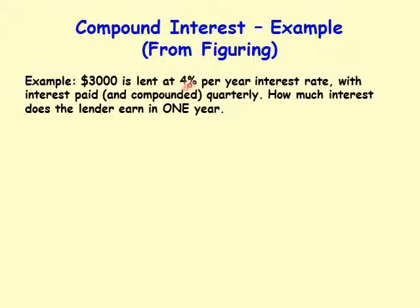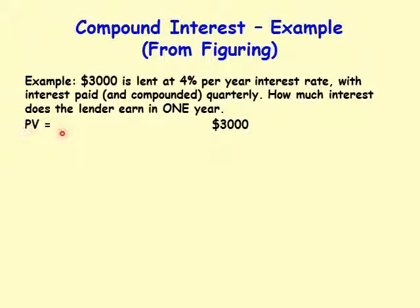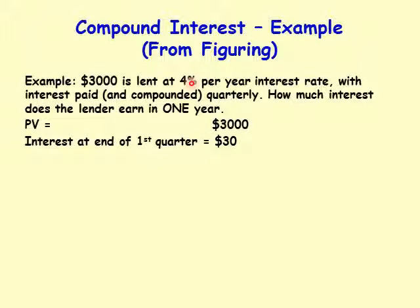Let's look at an example from the book 'Figuring.' Three thousand dollars is lent at four percent per year with interest paid and compounded quarterly. How much interest does the lender earn in one year? The principal value is three thousand dollars. The interest rate is four percent per year, which is equivalent to one percent per quarter.